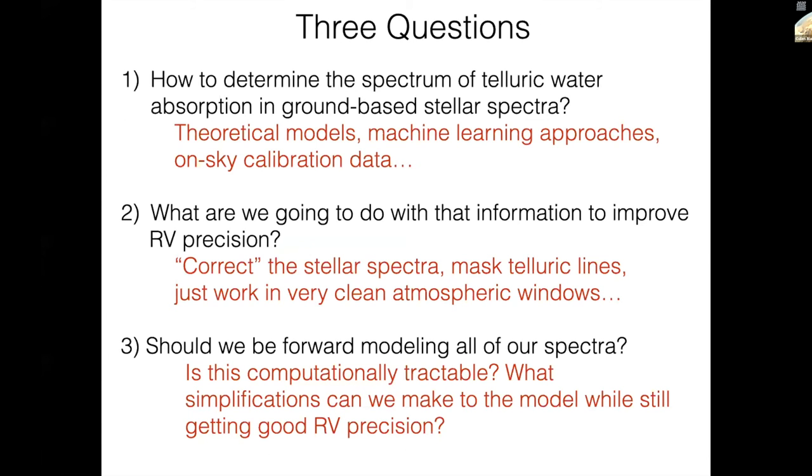When I think about telluric lines, there are three questions that come to mind. How are we going to determine the spectrum of telluric water absorption in our spectrum? Are we going to use theoretical models? Are we going to use a machine learning approach? Are we going to use on-sky data? The second question is, what are you going to do with that information? Let's say you had an observation of your favorite star and I handed you the perfect telluric model corresponding to the atmosphere at that time. What would you do with it? And then third, should we be fully forward modeling all of our spectra to help us understand both what the star is doing, what the instrument is doing, and what Earth's atmosphere is doing?